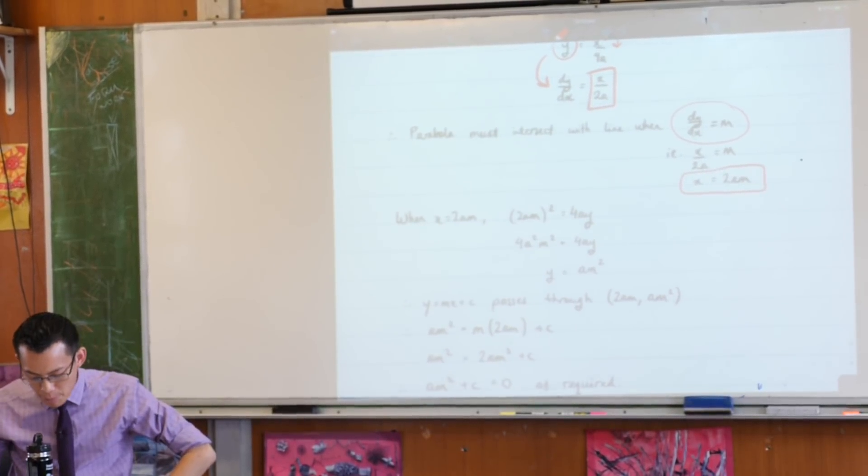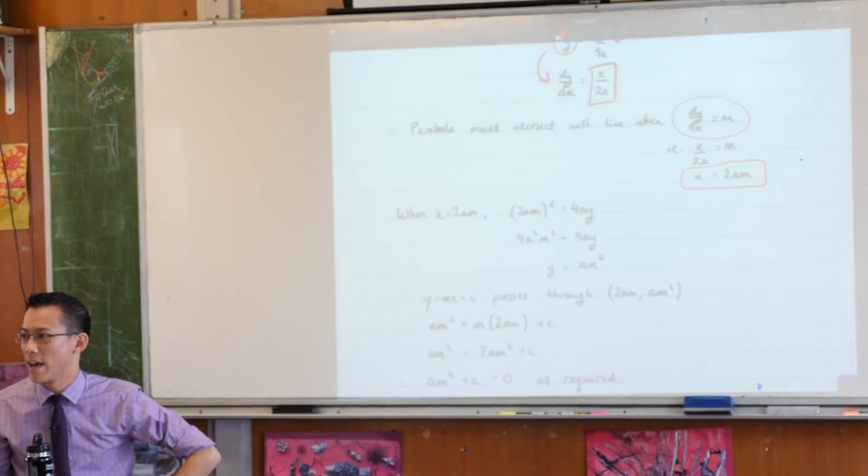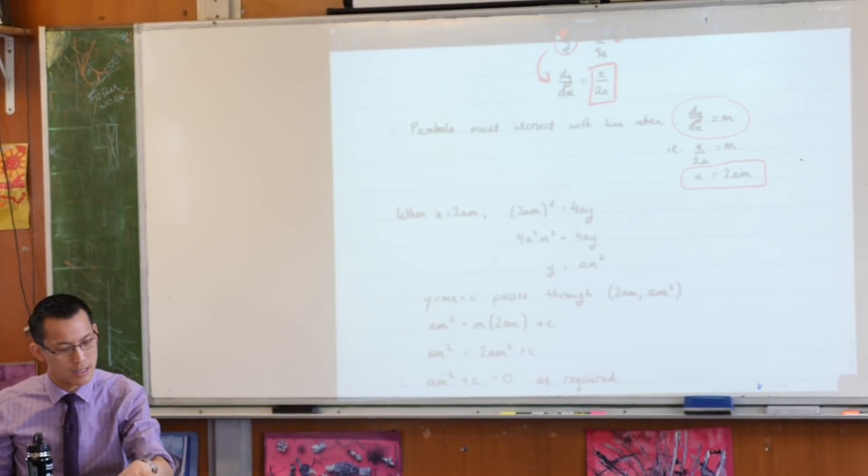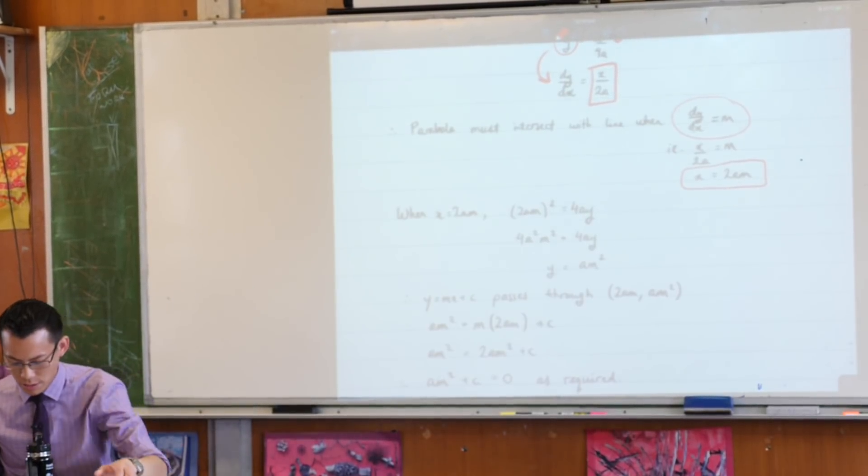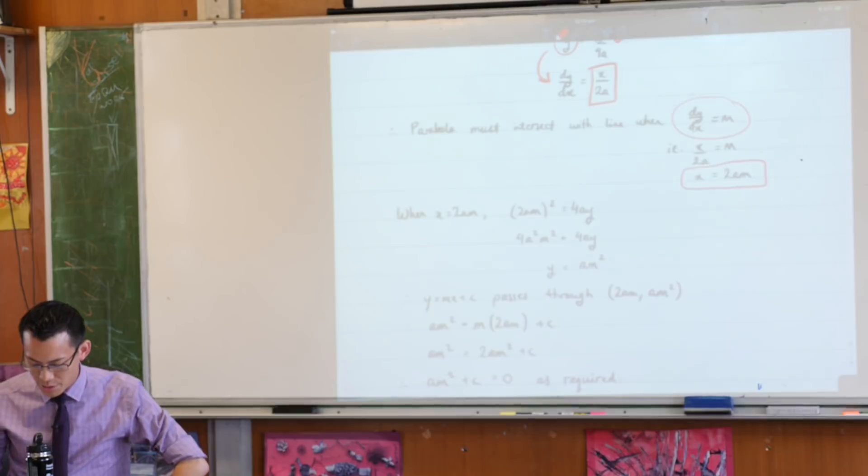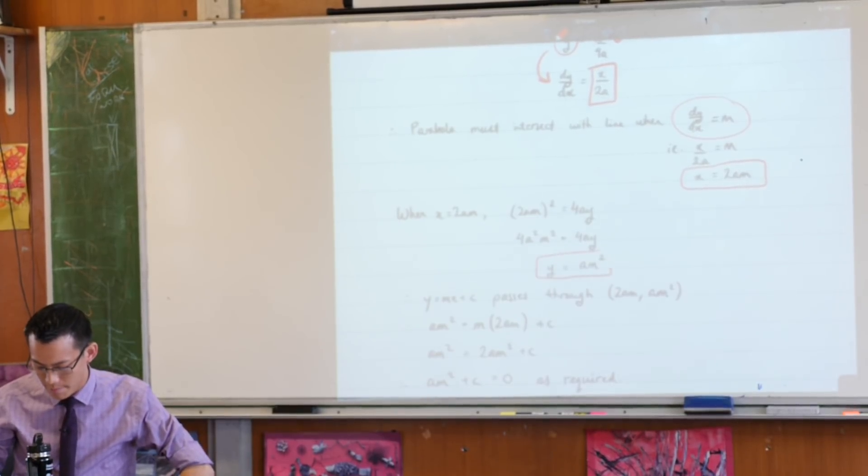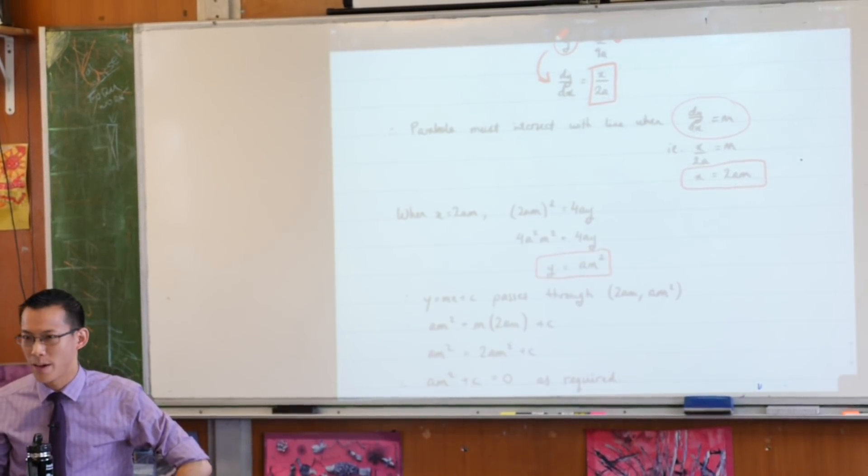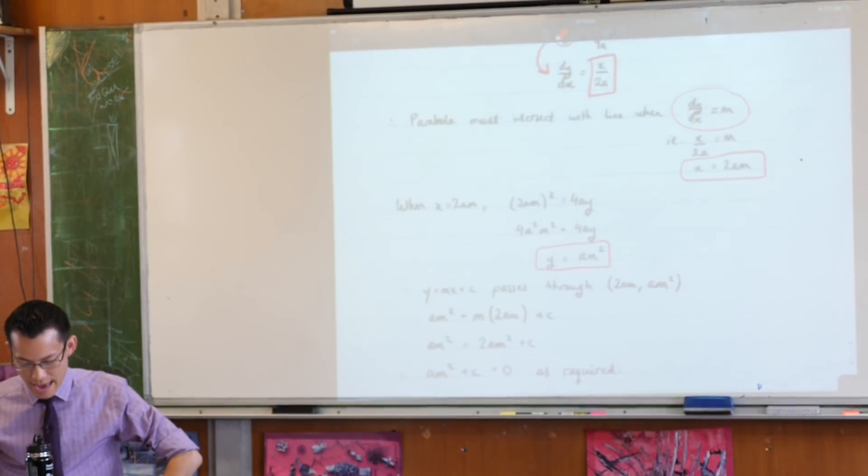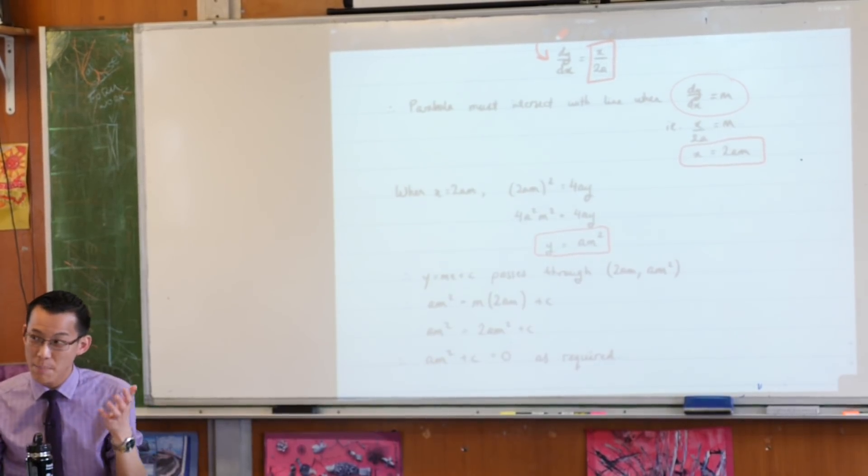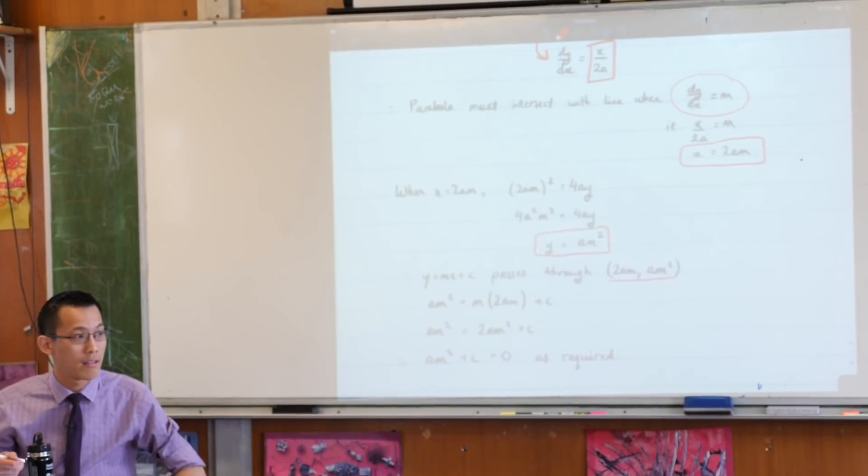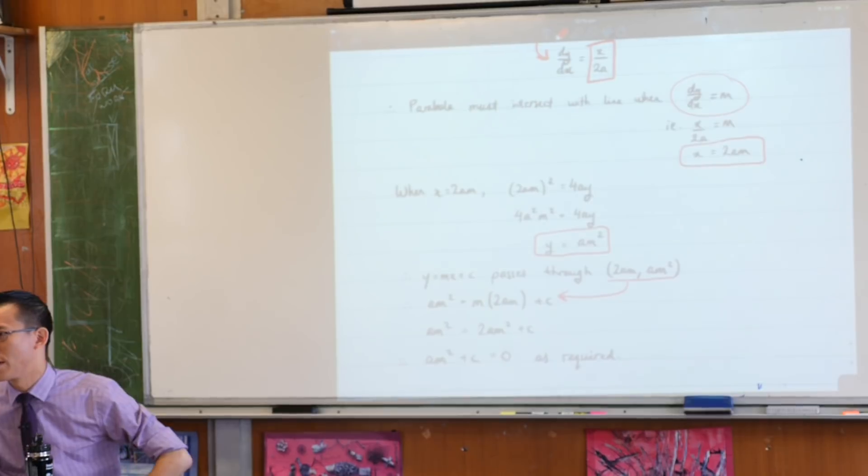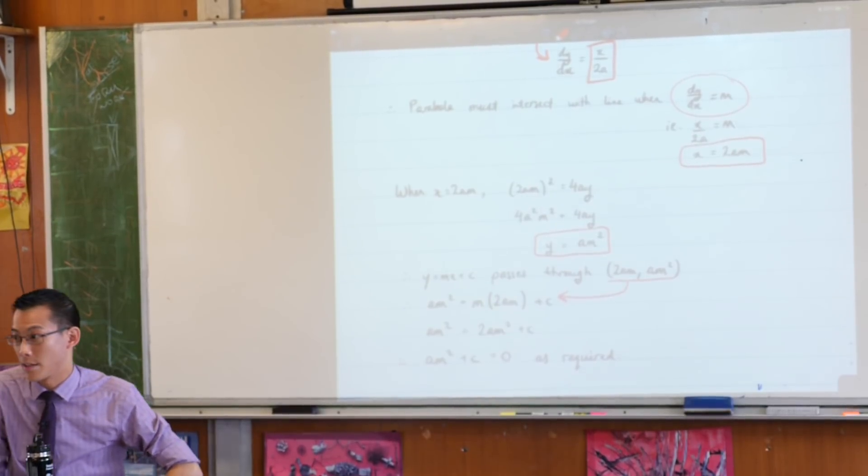So we've sort of come to the same point but from different angles, right? I'm not done yet though because x equals 2am, that's nice, but it doesn't get me this piece of information here, am squared plus c equals zero. So in order to get to that, I wanted to find a y-coordinate that goes with it. 2am, am squared, that sounds familiar, doesn't it? And I said, well, if my straight line passes through that point, then these coordinates will satisfy the equation of the line. So I substituted it in and then you just have to rearrange a little bit to get your required answer.